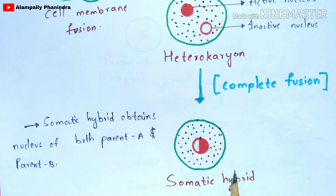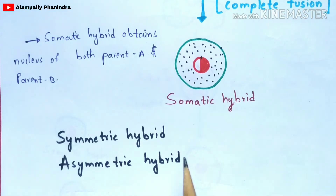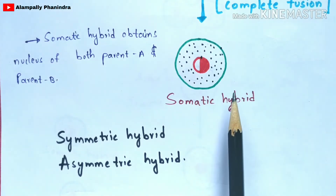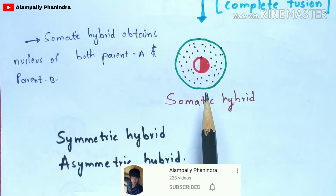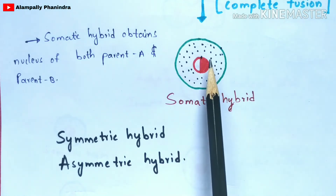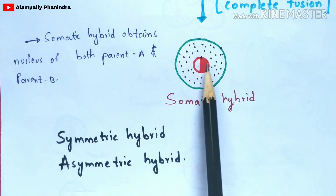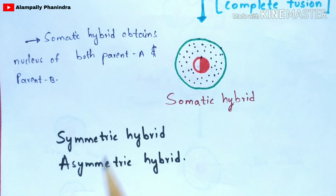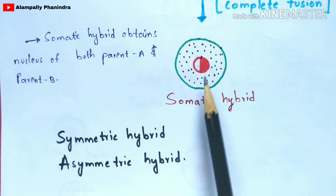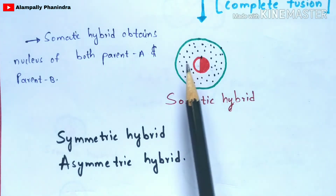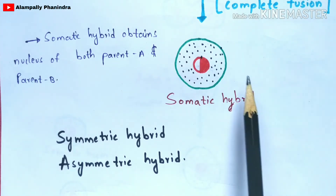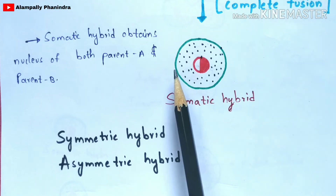The formation of somatic hybrids is of two kinds: symmetric hybrid and asymmetric hybrid. In a symmetric hybrid, the hybrid receives the nucleus from both Parent A and Parent B — the shaded region is the active nucleus from Parent A, and the unshaded region is the inactive nucleus from Parent B. In an asymmetric hybrid, the nucleus is obtained from only one parent, not from both parents.